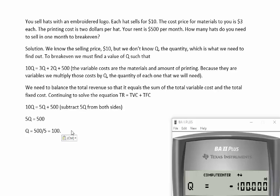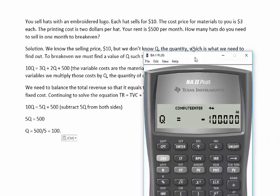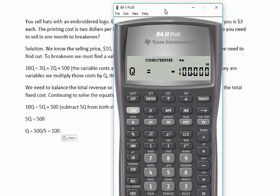If we sell 100 hats, then we pay off the fixed costs and the variable costs. Let's do that now using the BA2 calculator.